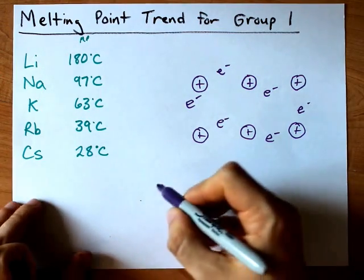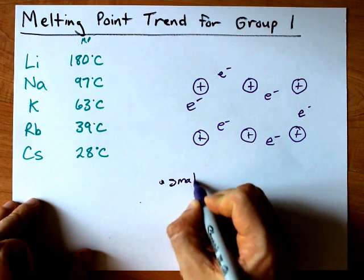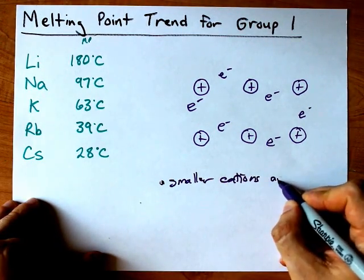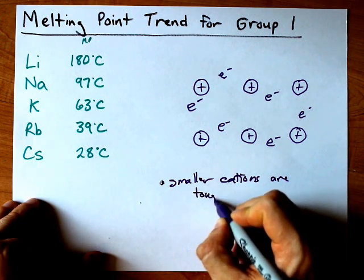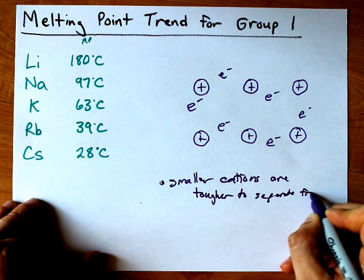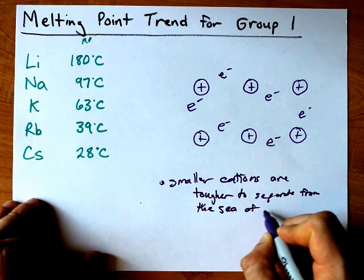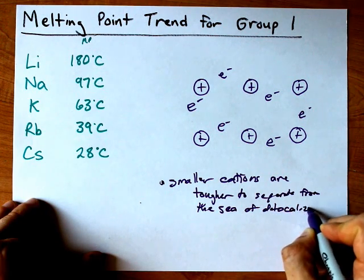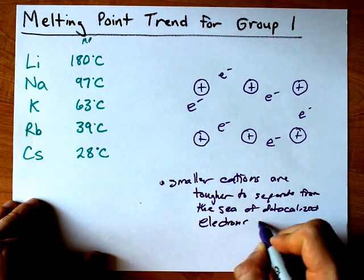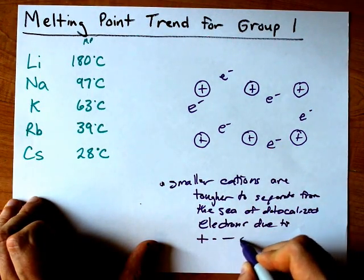So let's summarize that in case you actually have to answer this. Smaller cations are tougher to separate from the sea of delocalized electrons due to plus minus attraction.